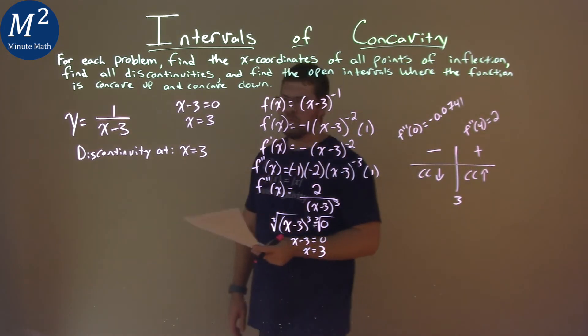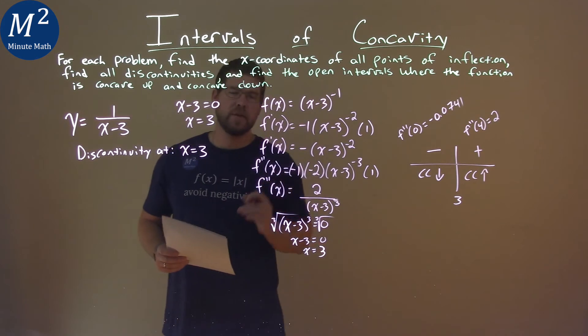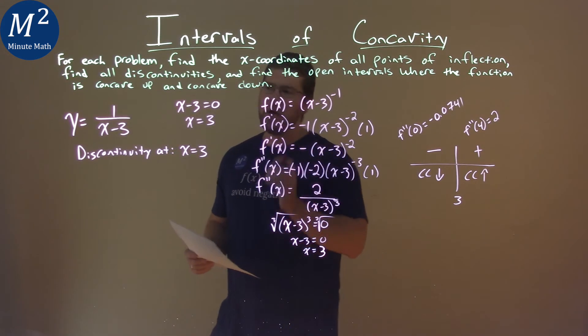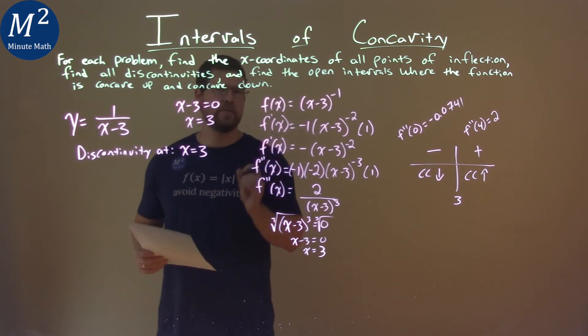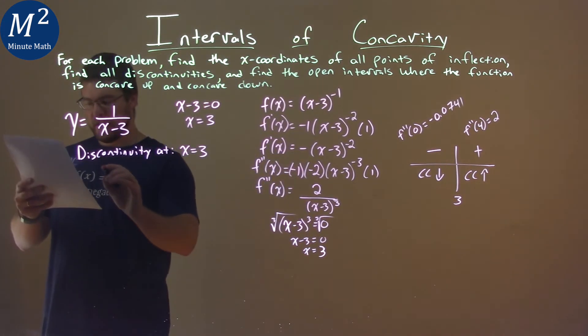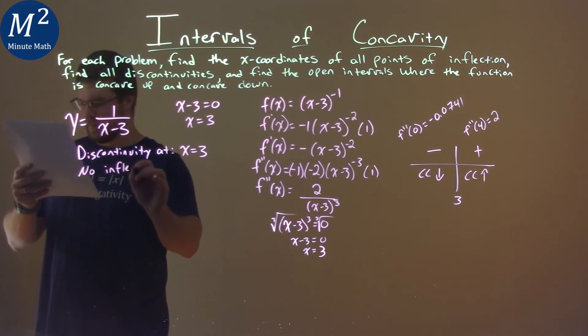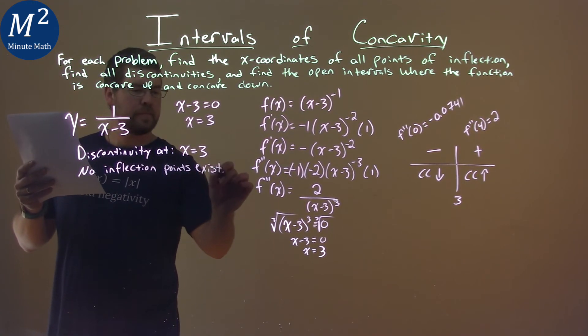So here's a tricky point. Right off the bat, you want to say okay, concave down, concave up, point of inflection, but not true. We have an asymptote at 3, and we can't have a point of inflection there because we have an asymptote. So we would say, actually, that no inflection points exist.